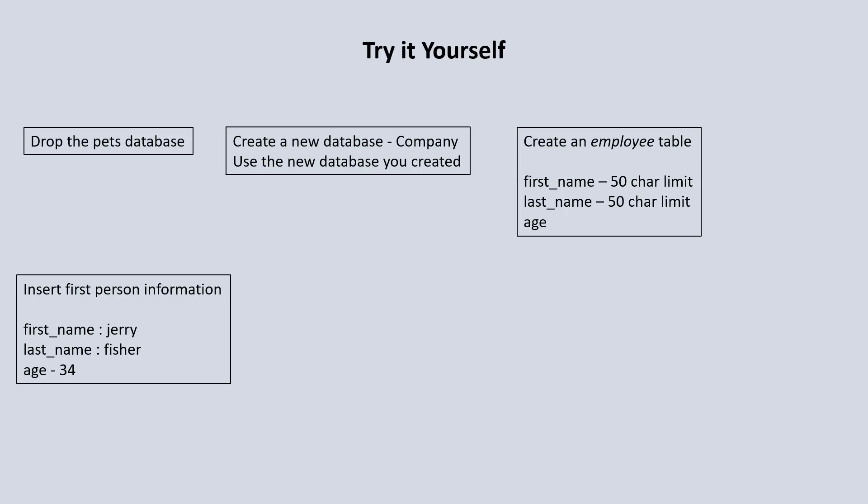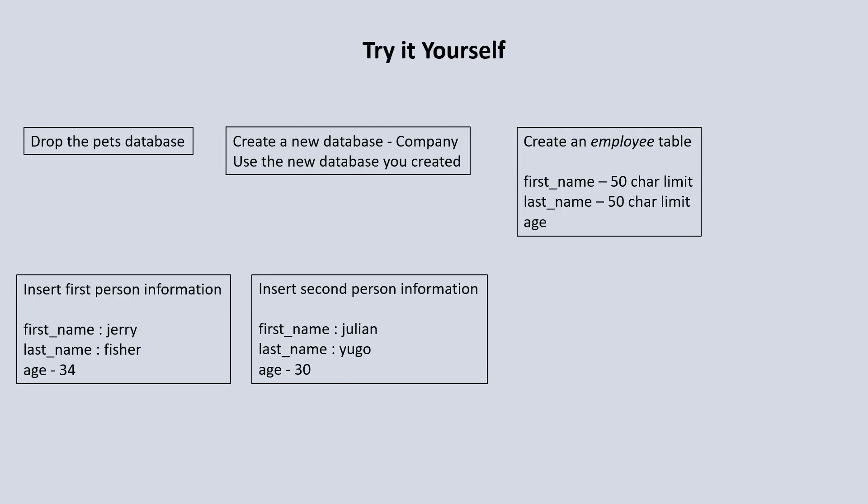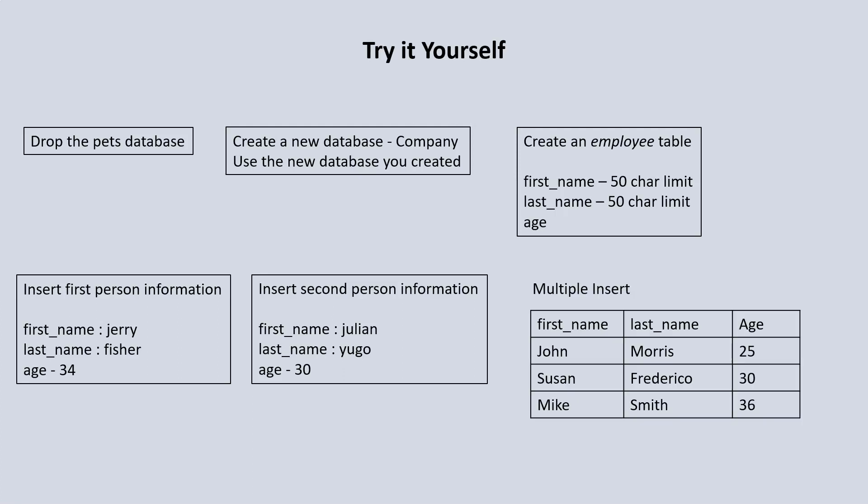Then you'd insert information. The first record would be first name Jerry, last name Fisher, age 34 — that's a single insert. Then insert a second person: first name Julian, last name Hugo, age 30. The final insert would be a multiple insert with three records at the same time: John Morris age 25, Susan Frederico age 30, and Mike Smith age 36. Once you do that, print out the employee table to display all records.